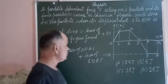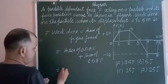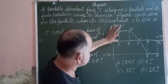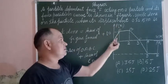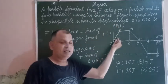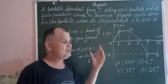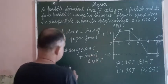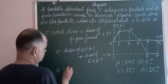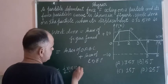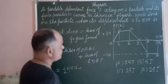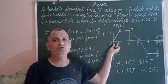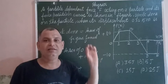Now, the area of this part. This is a right-angle triangle, so the area of a triangle is half base into height. The height is 4 and the base from 0 to 1 is the displacement.